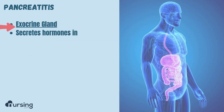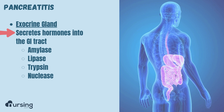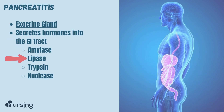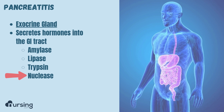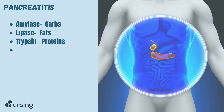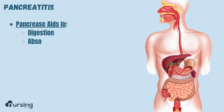Exocrine means it secretes chemicals into the GI tract. The pancreas secretes digestive enzymes like amylase, lipase, trypsin, and nuclease. Amylase breaks down carbs, lipase breaks down fats, trypsin breaks down proteins, and nuclease breaks down nucleic acid. So the pancreas plays a huge role in digestion and absorption of food and nutrients.